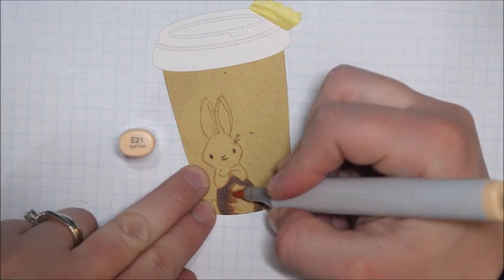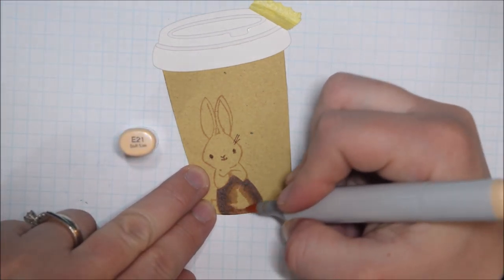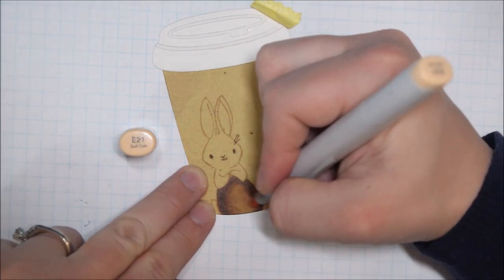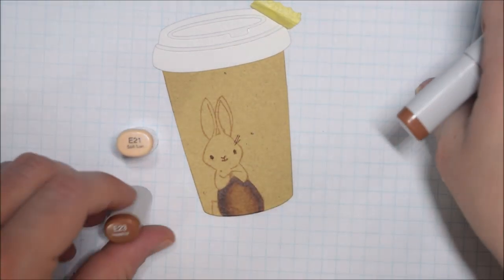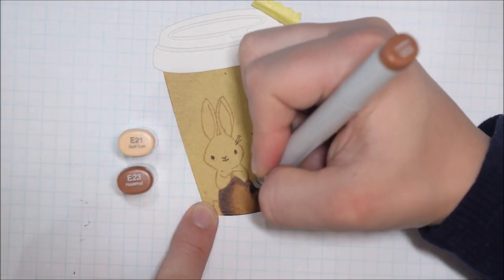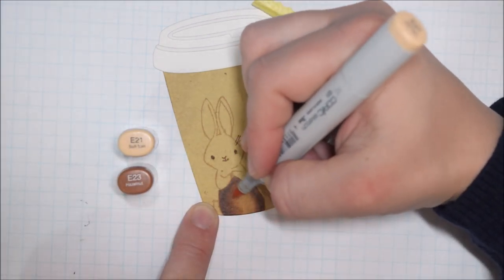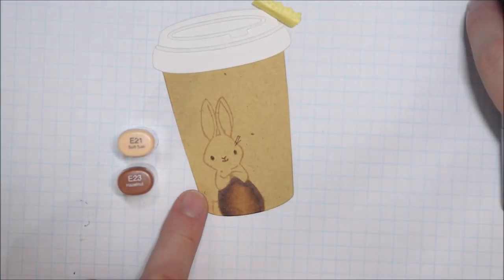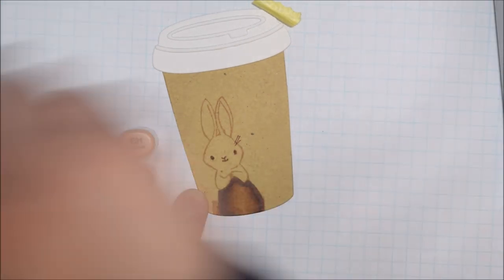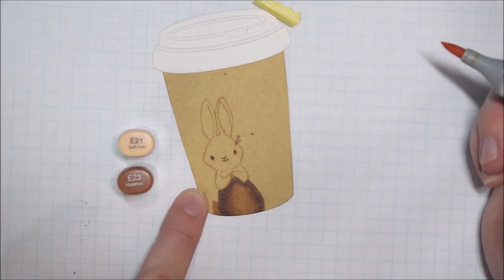Copic multi-liners are Copic-safe so they won't smear. Most pens are water-based - like Pitt Artist Pens - and a lot of pens in my collection would have just smeared and you would have to do it at the end of the Copic coloring. But by having a Copic multi-liner, I was able to trace at the beginning.